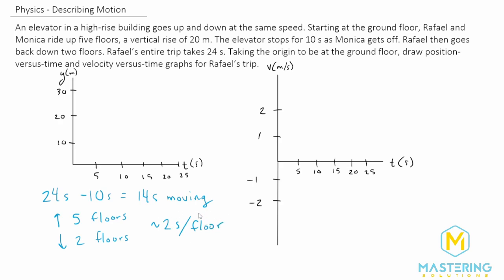So now that we have that information, now we can plot the position and the velocity versus time graphs. So we start out at zero seconds and we're at the ground floor. And then it goes up for five floors at two seconds per floor. That's going to be 10 seconds.